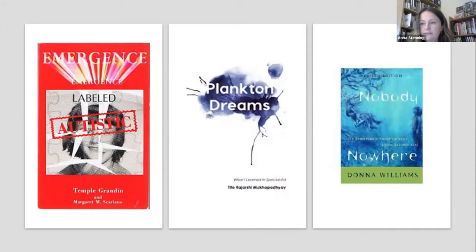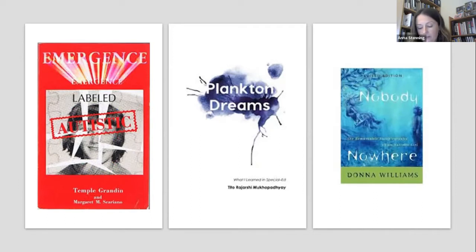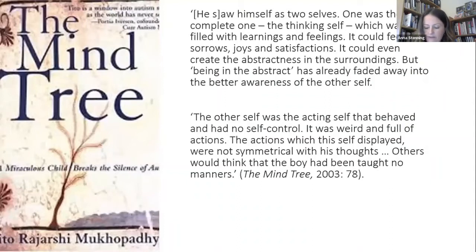Where autistic autobiography has been dealt with, both critics and clinicians have treated it as a straightforward product of a brain, registered in choices of language and style, rather than something possessing distinct literary qualities. Autobiography by popular writers such as Temple Grandin and Donna Williams was accused of either failing to confirm expectations of autism, or having deficient narrators. Others have suggested that where these texts do conform to expectations, they cannot be the works of autistic authors, or that the authors are masking.